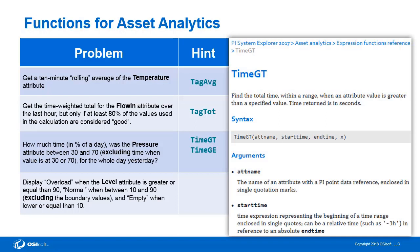We can see that we need to specify the attribute name, the start time and the end time, as well as x. Looking at the definition, it says: find the total time within a range when an attribute value is greater than a specified value. Time returned is in seconds. It's important to note that the time returned is in seconds, and that we need to put in a specified value. In that case, the attribute name we'll know is pressure, the start time and end time we can configure using yesterday and today, and x represents the value that we'd like to specify.